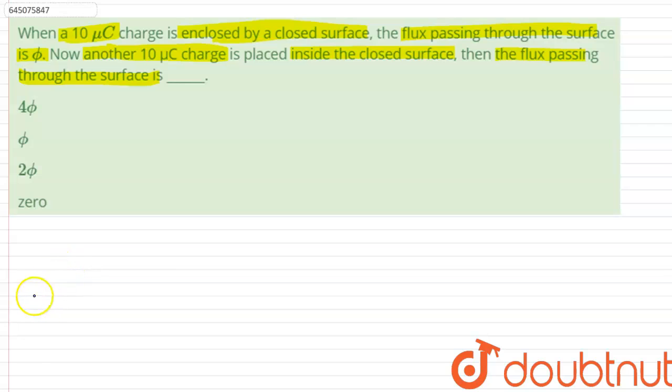The flux passing through the surface in case 1, which can be denoted by phi, is equals to q divided by epsilon naught. This implies that phi is equals to 10 micro coulomb divided by epsilon naught.